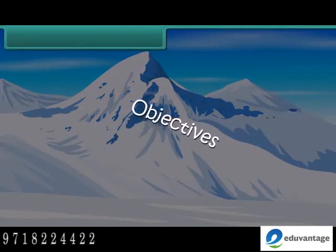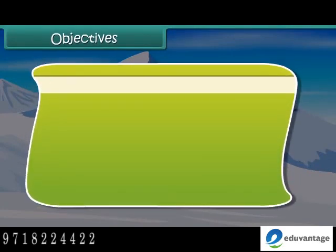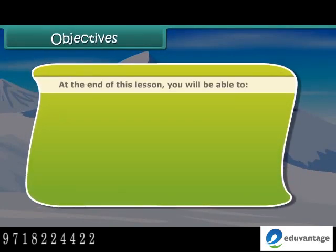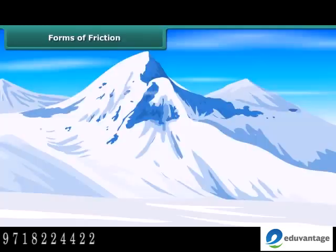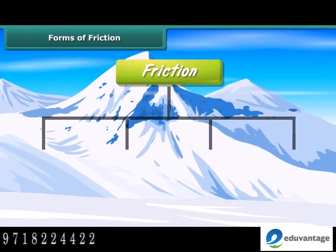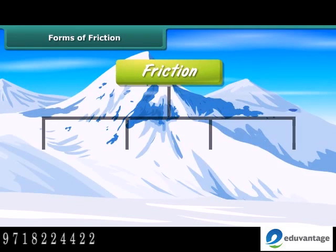At the end of this lesson, you will be able to describe the types of friction, discuss advantages and disadvantages of friction, and illustrate the ways to reduce or increase friction. Friction can be classified into four types: static friction, sliding friction, rolling friction, and fluid friction.